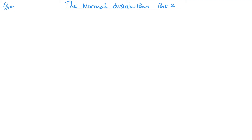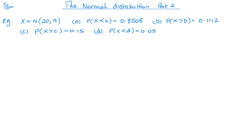Welcome back to S1. This is the second video for normal distribution. I'm going to try and keep it as short as possible and make it as easy to follow as possible. In this one we're going to look at finding the value of our random variable or our value of z, then converting it back once we know the probability. We'll use either the main table or the second table, which is our percentage points table, a small one in the back.